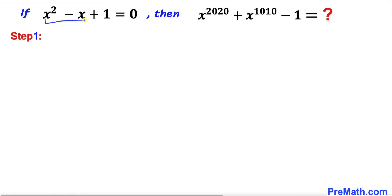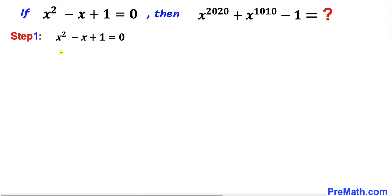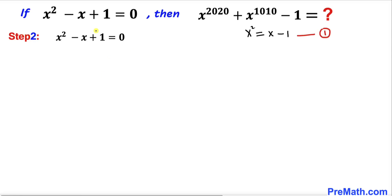Let's focus on this quadratic equation. We move the negative x and positive 1 to the other side, so we get x squared equal to x minus 1. Let's call this equation number 1.